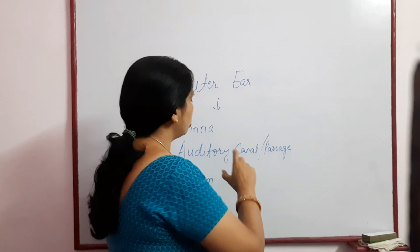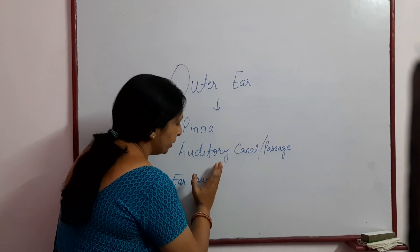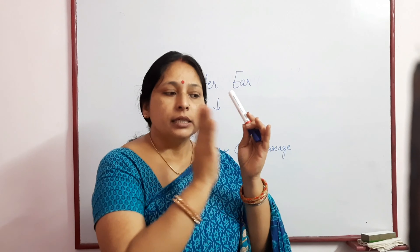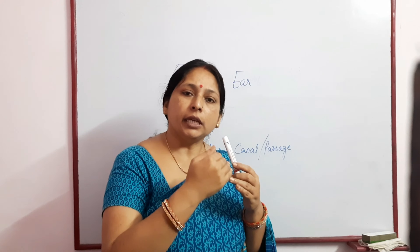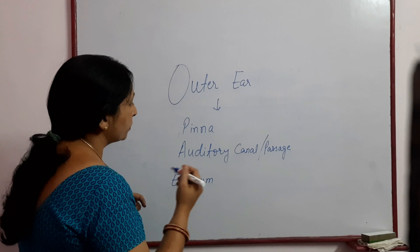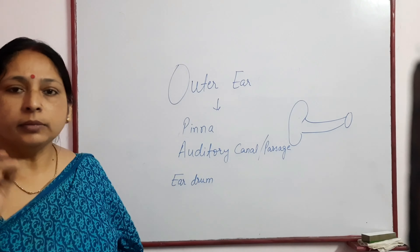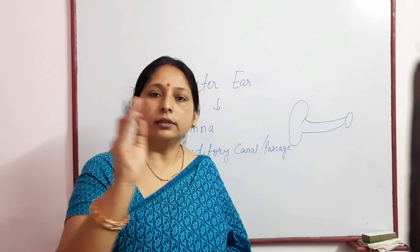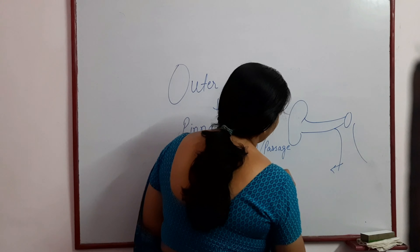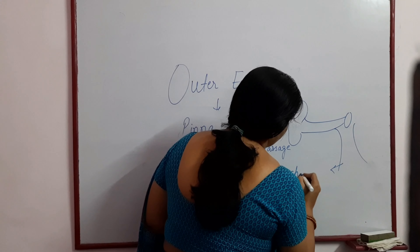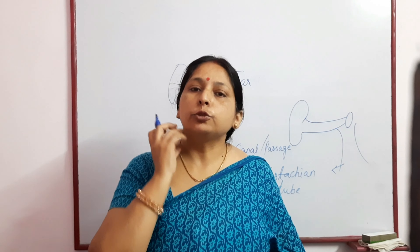The outer ear comprises two main parts: the pinna and the auditory canal or passage. The auditory passage leads to a membrane on which waves strike and create vibration. This passage ends at the eardrum - a white, thin membrane on which waves strike and create vibration that is further transmitted. The eardrum connects the ear passage to the throat area.